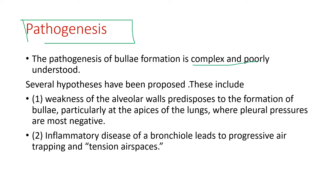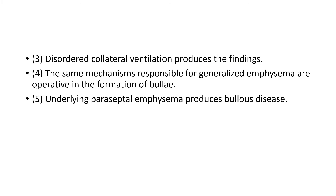Regarding pathogenesis, there are several hypotheses but it is very poorly understood. Some hypotheses suggest that the alveolar wall becomes weak, particularly at the apex of the lung, causing bulla formation. Another hypothesis is that inflammatory obstruction of the bronchiole leads to progressive air trapping and tension.